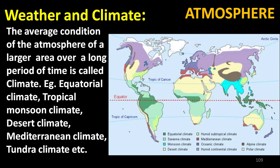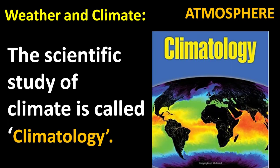The average condition of the atmosphere of a larger area over a long period is called climate — for example, equatorial climate, tropical monsoon climate, desert climate, Mediterranean climate, and tundra climate. The scientific study of climate is called climatology.